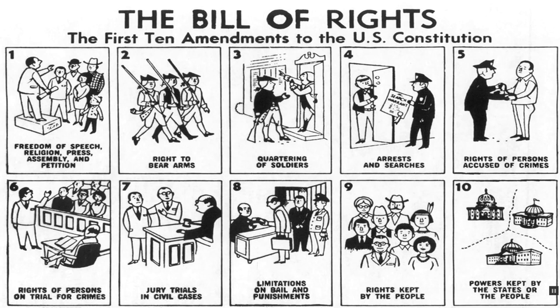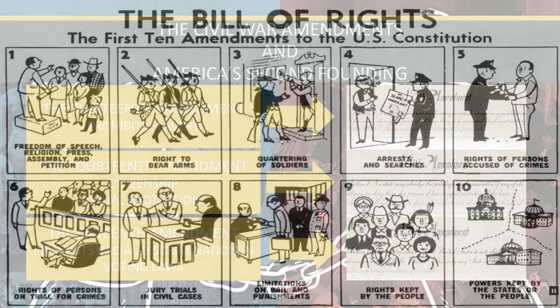The main thing to understand about the Bill of Rights is that it is where we find most limits on government activity and most of our individual freedoms. There are only three constitutional liberties protected in the main body of the Constitution — I encourage you to look those up. The Bill of Rights secures our individual liberties as a way to limit government.